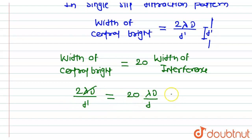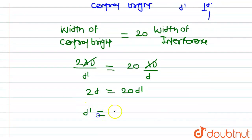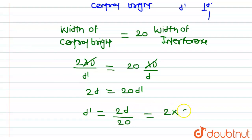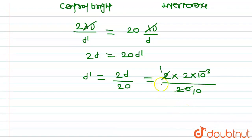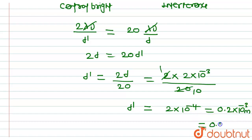Now, lambda capital D cancels from both sides. So 2 times small d equals 20 times d dash, therefore d dash, that is the width of the single slit, equals 2 times small d divided by 20, which equals 2 times 2 mm, that is 2 into 10 raised to the power minus 3, divided by 20. This gives 2 into 10 raised to the power minus 4, which equals 0.2 into 10 raised to the power minus 3 metres, that is 0.2 mm.